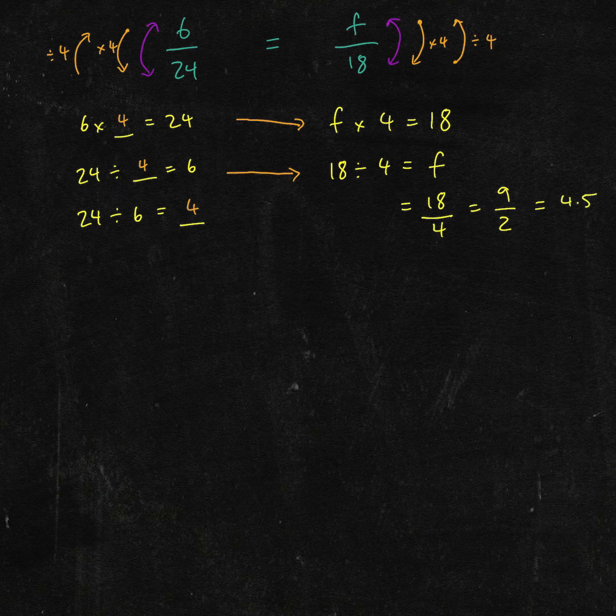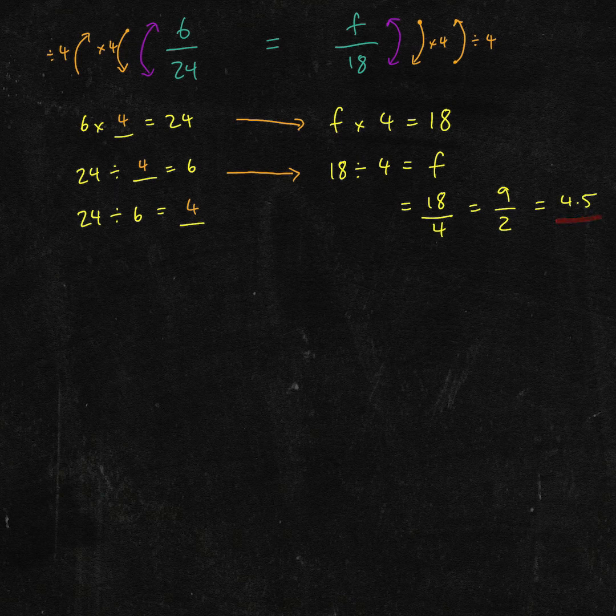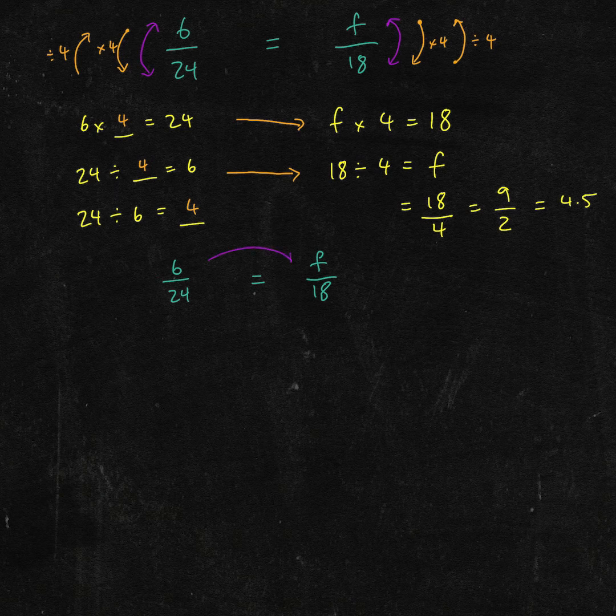So for 18 eggs, we need 4.5 kilos of flour. You can look in between the numbers as well to get the same result.